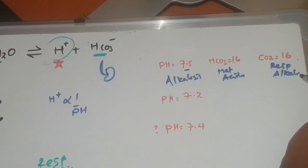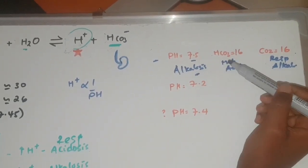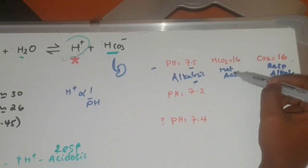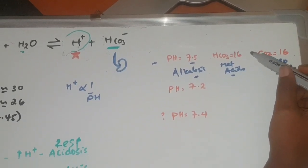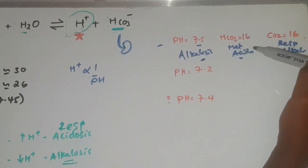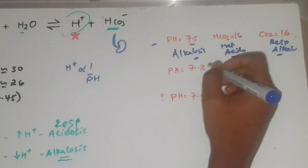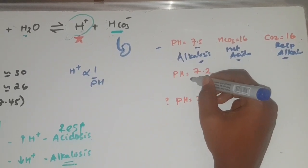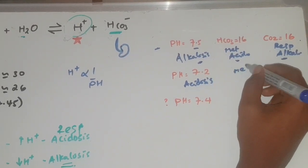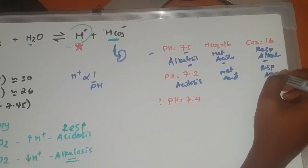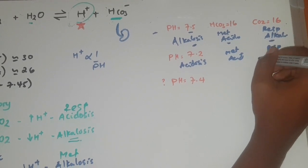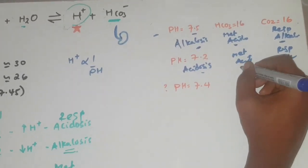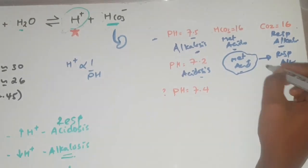Our body is going through alkalosis. So we have both metabolic acidosis and respiratory alkalosis. The pH is acidotic at 7.1, and we have metabolic acidosis with respiratory alkalosis — this is metabolic acidosis with respiratory compensation.